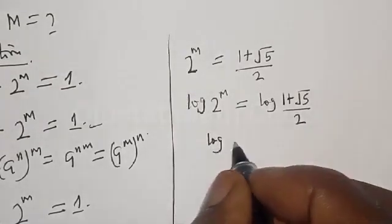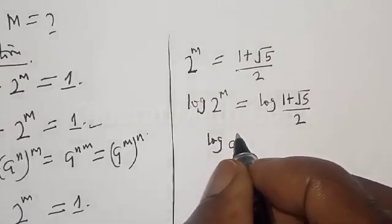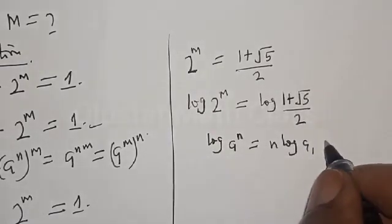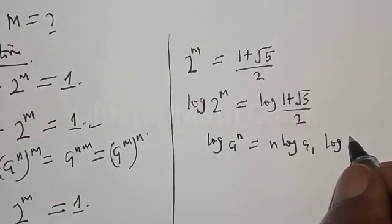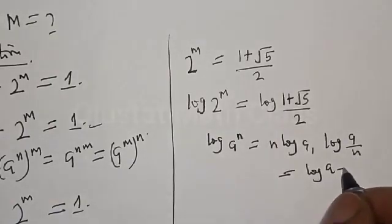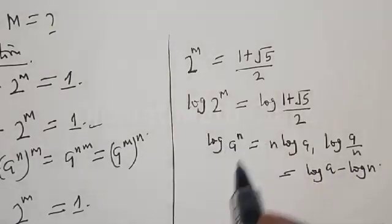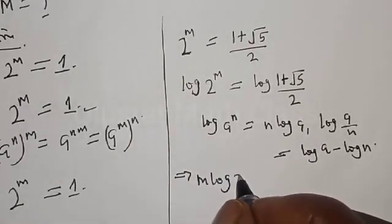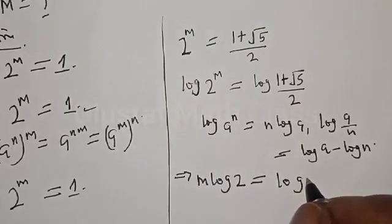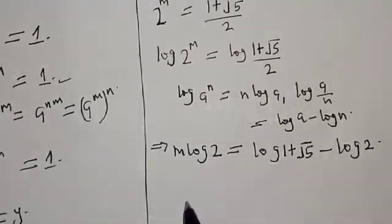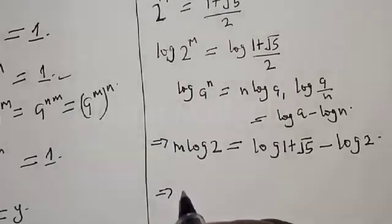Therefore we have log of 2 raised to power m equal to log of 1 plus root 5 divided by 2. Recall that log of a raised to power n is the same as n log a, and log of a over n is the same as log a minus log n. Therefore our equation becomes m log 2 equal to log of 1 plus square root of 5 minus log 2.